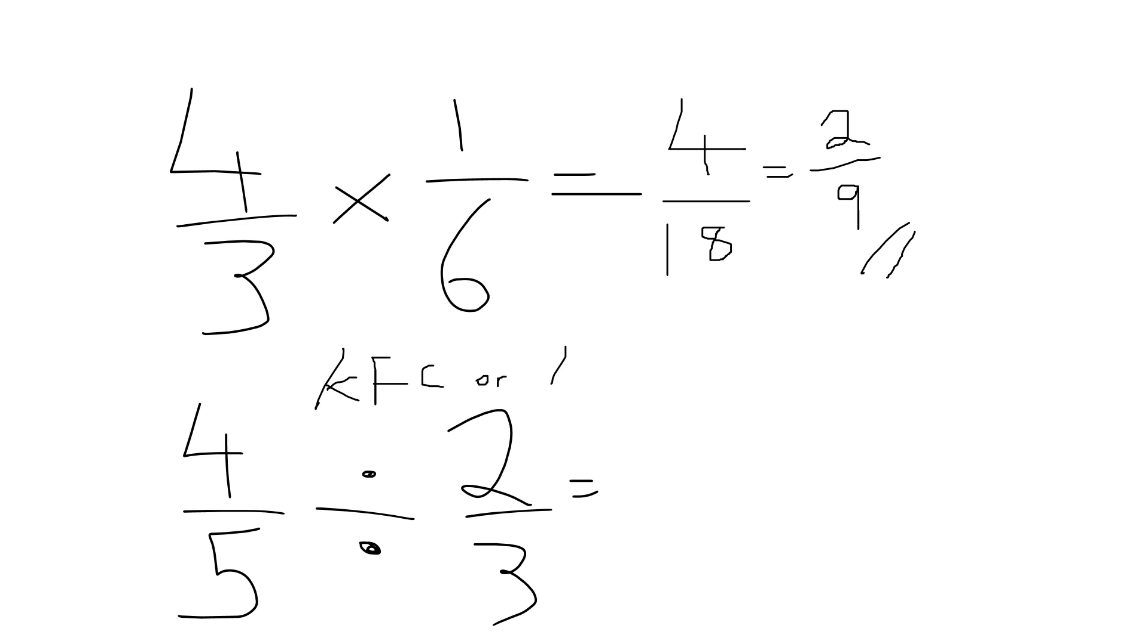So we keep the first fraction the same, we flip the second fraction, and then we change the division to multiplication. We have four fifths, you're going to have three halves, and we're going to change it to a times.